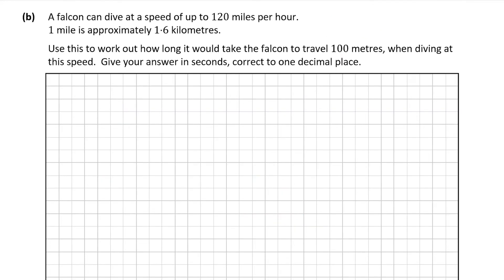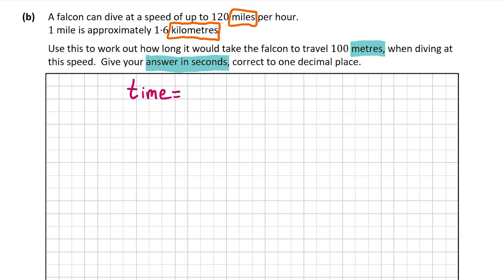Now let's look at part b. We're asked to work out how long it would take the falcon to travel 100 meters when diving at 120 miles per hour, and we need to give our answer in seconds. This is harder than it seems because the speed is given in miles per hour but we need meters per second. The formula for time — which is not in the formula book, so please learn it — is time = distance ÷ speed. The distance is 100 meters.